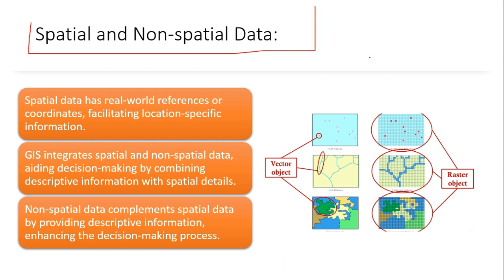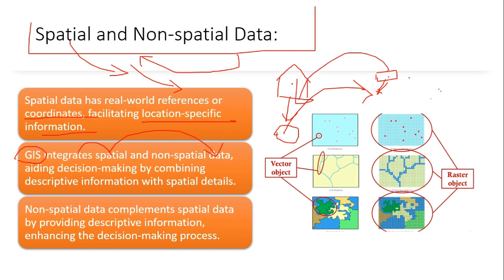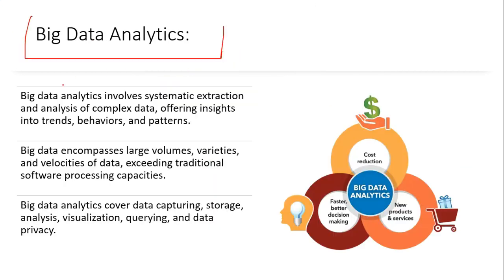Spatial data has a real-world reference or location information like coordinates — location-specific information is known as spatial data. GIS helps integrate spatial data with non-spatial data, which is attribute data. For example, Taj Mahal's location in Agra is spatial data; adding attributes like its distance from the railway station or the area it covers is non-spatial data. Combining these provides richer information from the spatial data.